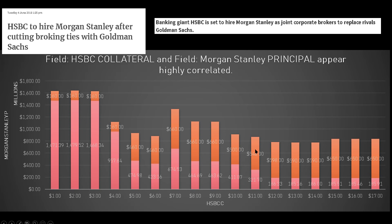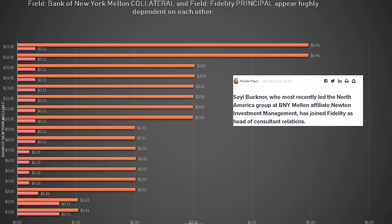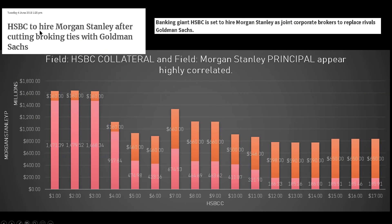It's been going down ever since. Without knowing exactly what they're doing, this is our best window into the collusion, if there is any between these parties. I didn't read the article from the last slide — HSBC to hire Morgan Stanley after cutting brokerage ties with Goldman Sachs. Banking giant HSBC is set to hire Morgan Stanley as joint corporate brokers to replace rival Goldman Sachs. Take that for what it's worth — I'm not saying this is certain, just very interesting once you plug in the data.